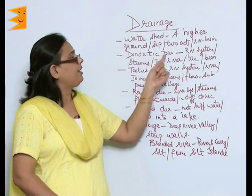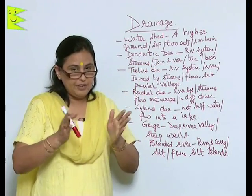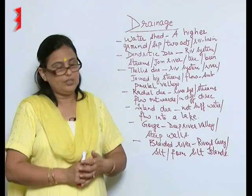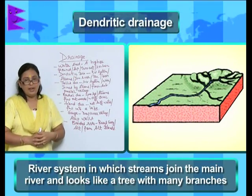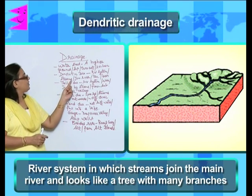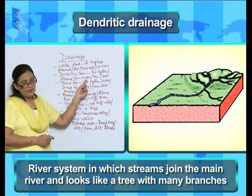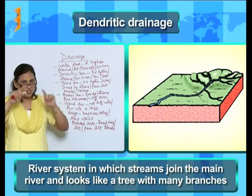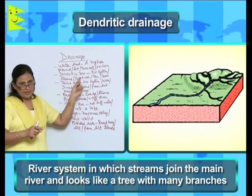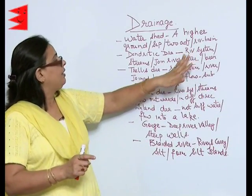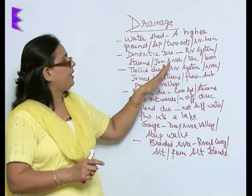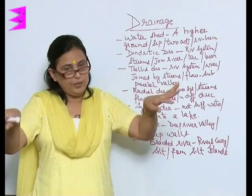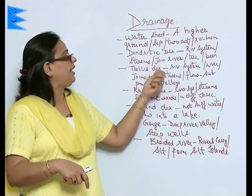Next is dendritic drainage. We are going to see the different kinds of drainage systems, and the first one is the dendritic drainage. The dendritic drainage is that river system in which the streams join the main river and it looks like a tree with many branches. That is the shape of a dendritic drainage — the river system is joined by streams flowing in such a way that it looks like a tree with branches.